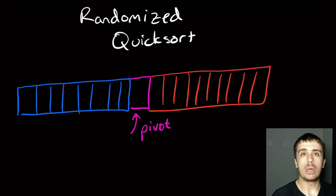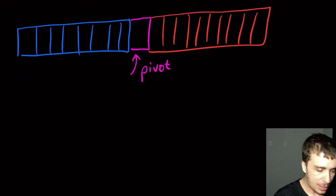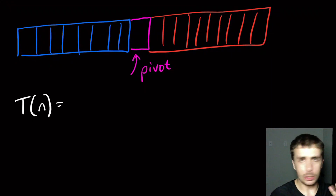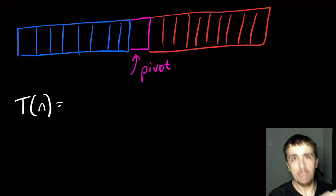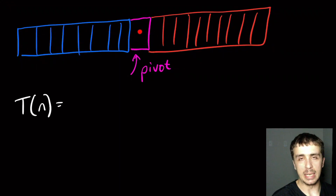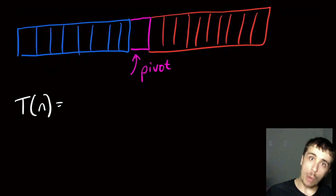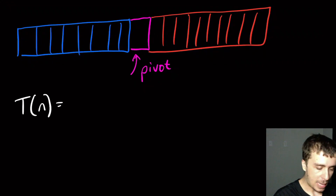So we want to analyze what is the expected runtime on average — not a guaranteed bound, but the expected runtime. Let's analyze T(n). Picking the random pivot takes constant time. Then we partition the elements into the two sets, which requires going through the entire array — so that's some constant c1 times n. Then we have the work for the two recursive halves.